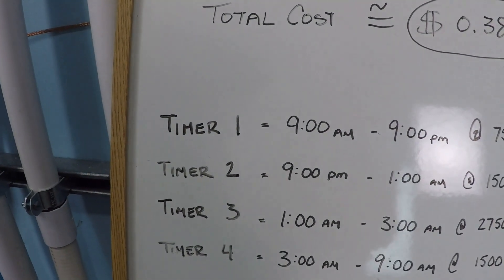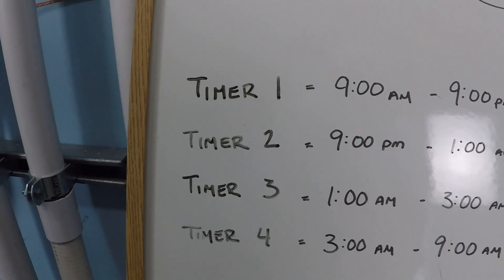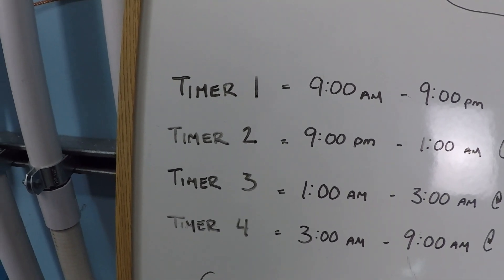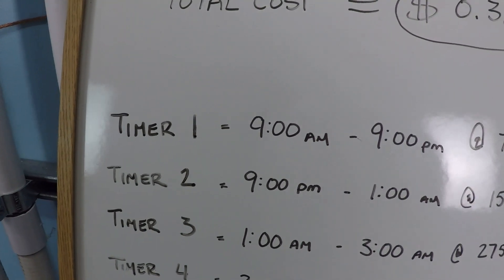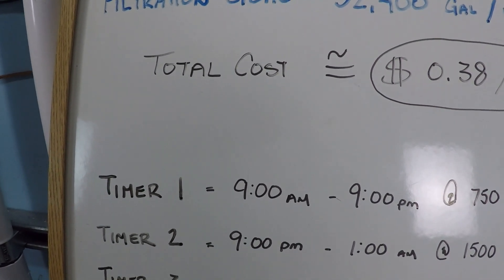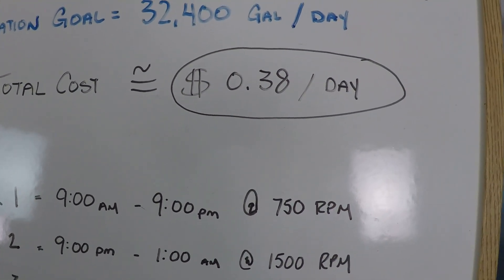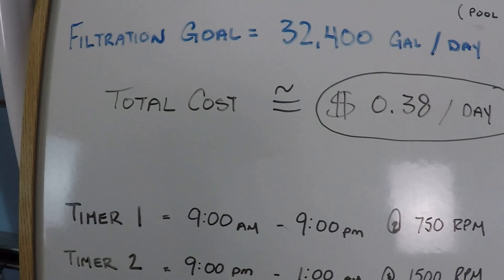So, the timer setup that we're going to use for this pump is going to have four different tiers to it. And the first tier is the one that's going to run during the middle of the day. Now, I've set this up from 9 a.m. to 9 p.m. So, it's basically all day long during the day at only 750 rpm.